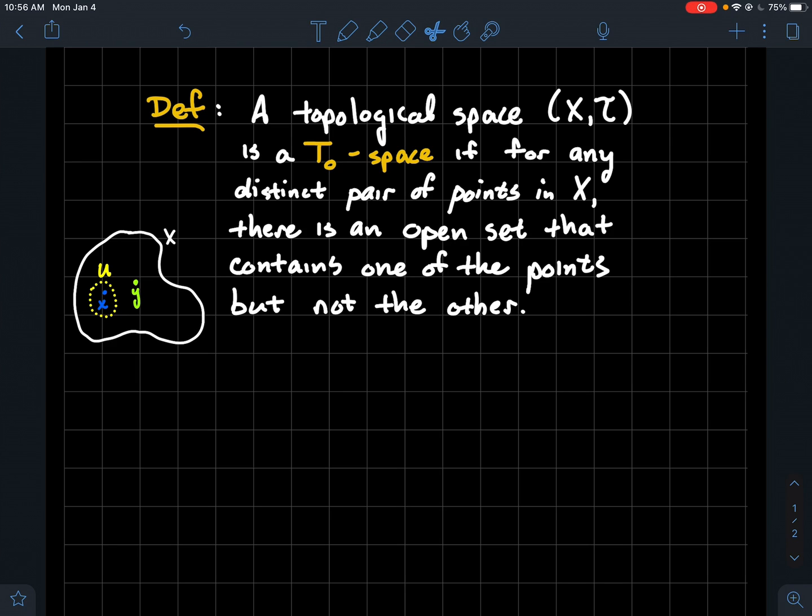All I'm saying is again there should just be an open set for one of the points—I'm only requiring it for one of the points—that will miss the other point. We'll look at an example later on to emphasize that sort of relaxed notion in this T₀ definition.